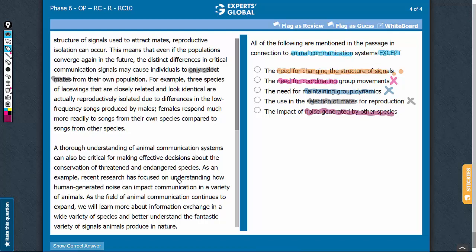Answer choice E: Impact of noise generated by other species. In the third paragraph, the passage mentions a study that is trying to understand how human-generated noise can impact communication among animals. So again, this answer choice has a reference in the passage. Let's eliminate it. A is the correct answer.